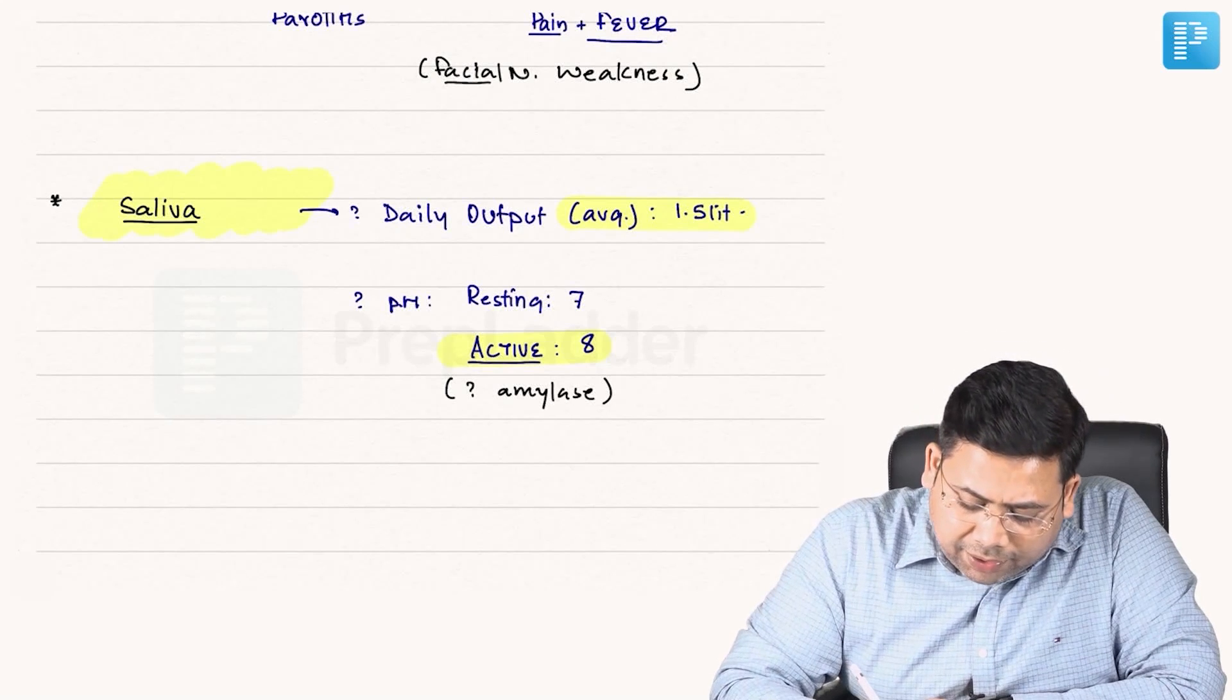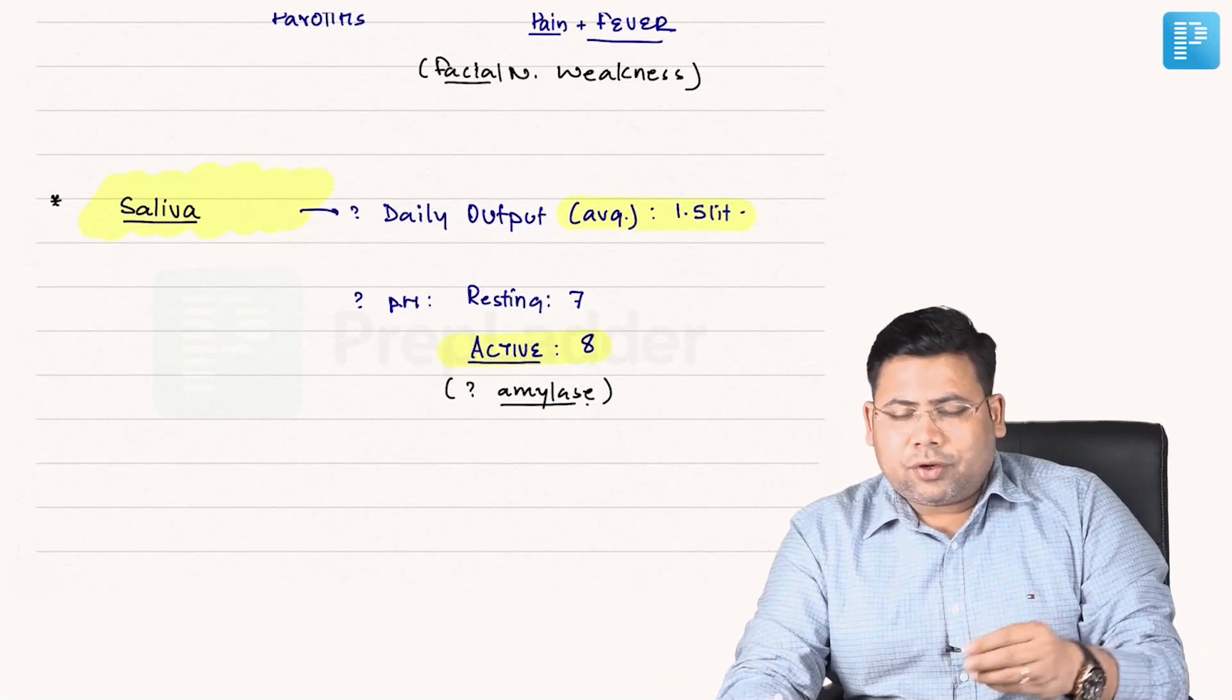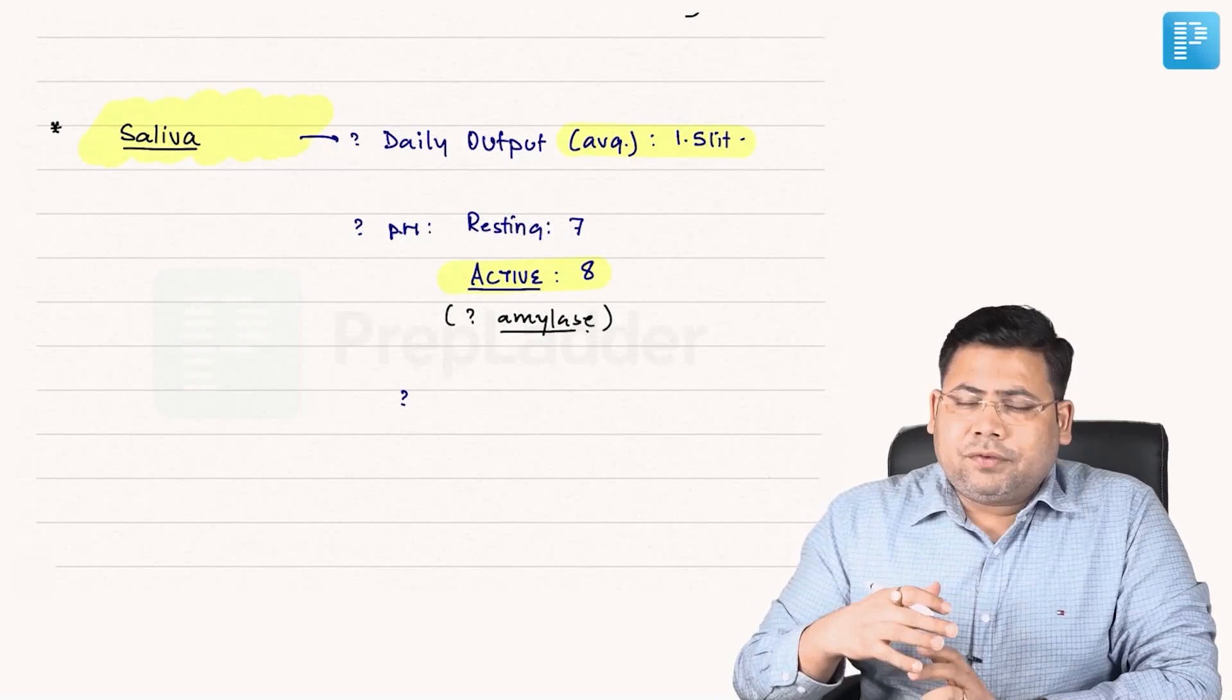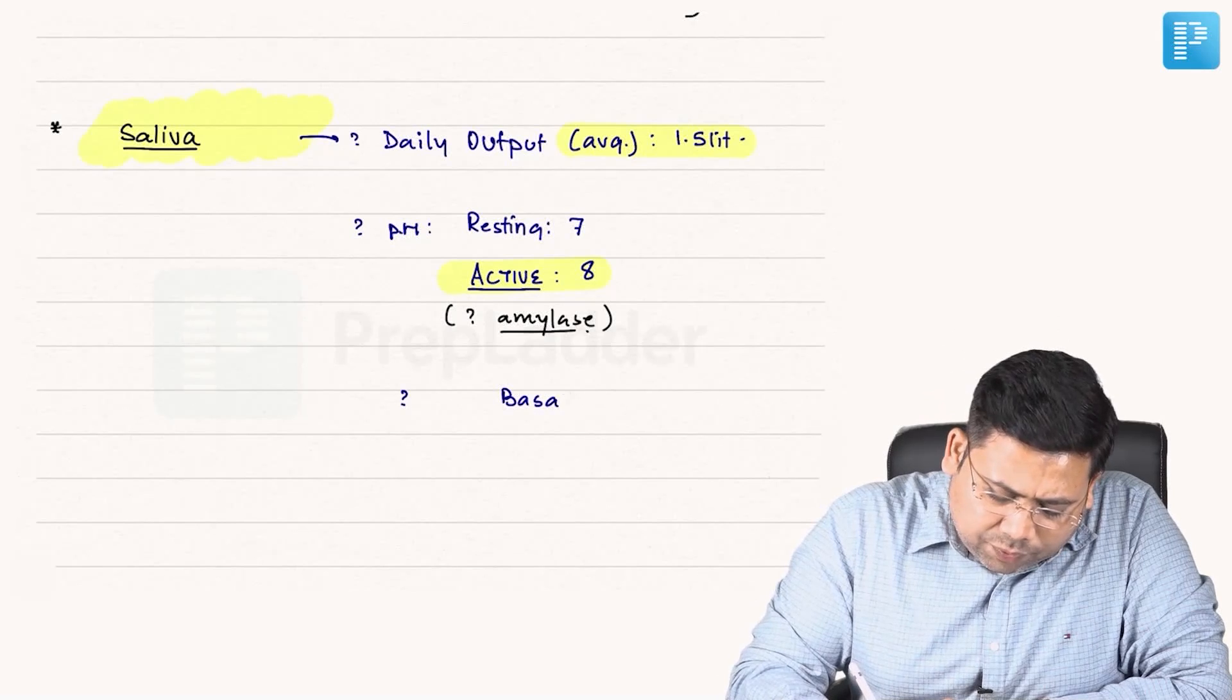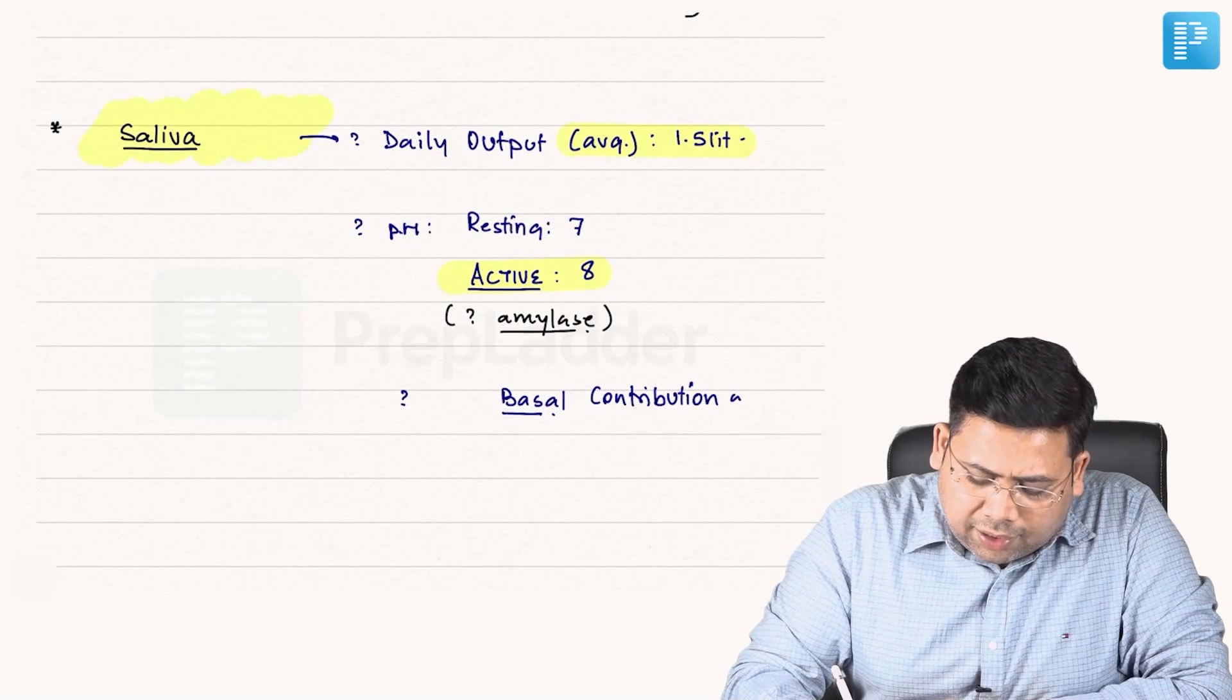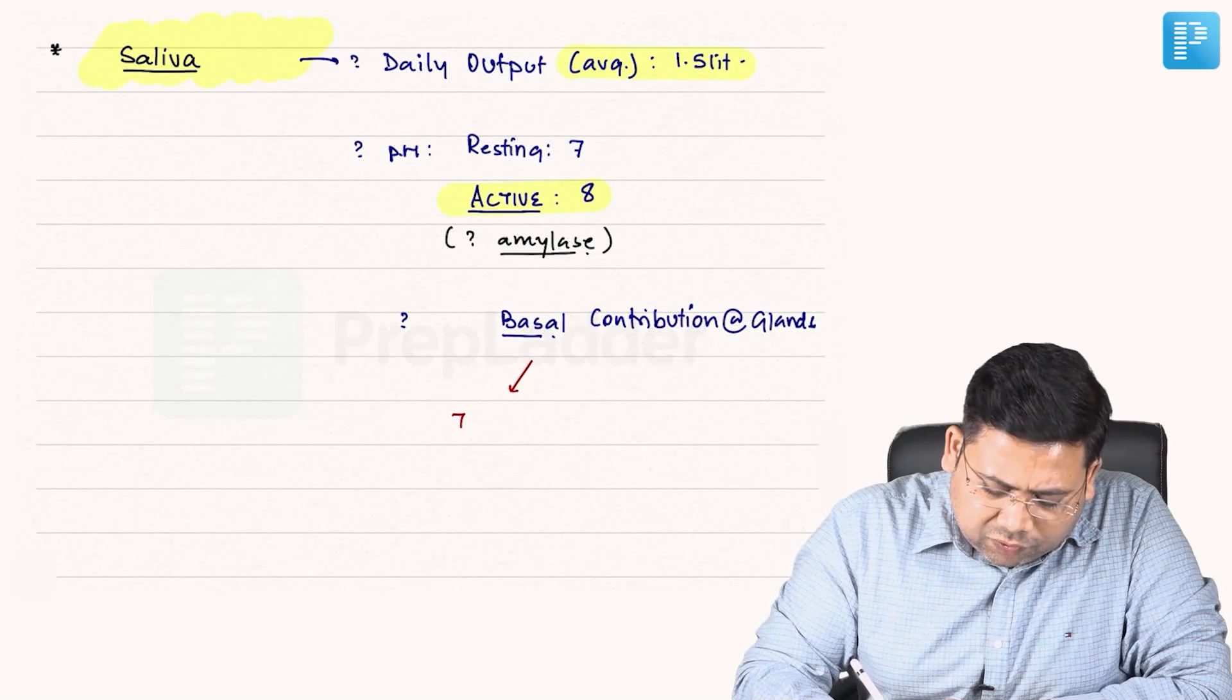Why is the pH of active saliva 8? Because of two important things: because of the amylase which is secreted by the salivary gland, yes amylase, and again the secretion coming from the tongue glands. So all these are actually going to contribute to active pH of 8. Next, let us see when we talk about the salivary contribution.